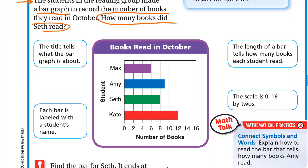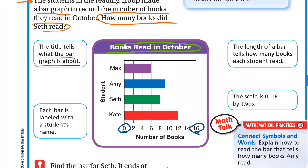Let's look at the bar graph. These are called bars. The scale shows where to start and where to end — here the scale is from 0 to 16. The title tells you what the bar graph is about, so this bar graph is about books read in October.